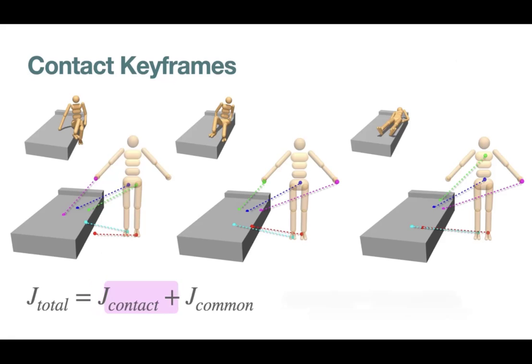The common objective terms include style terms such as posture, balance, facing, and regularization. Any of these terms could also be deactivated by setting its weight to zero.